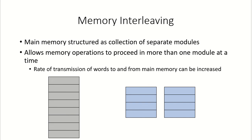One of the major bottlenecks in the performance of the processor is accessing the main memory. To access the main memory and retrieve words from it takes a lot of time, and one of the ways to avoid this is through a technique called memory interleaving. In this lecture we are going to discuss the two types of memory interleaving.